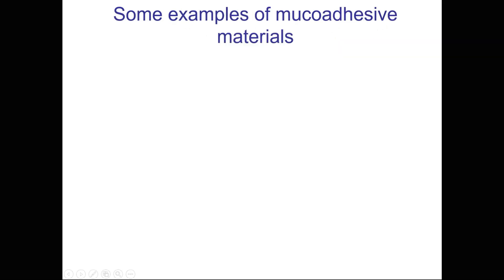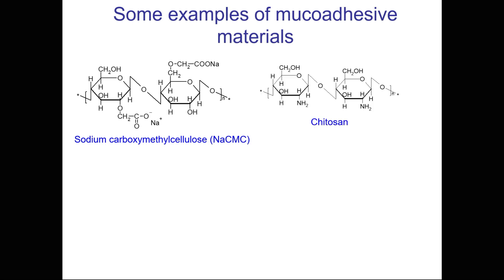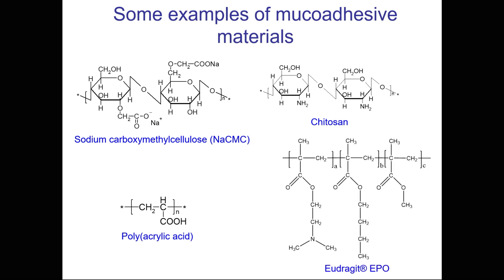Mucosal adhesive dosage forms can be prepared from formulations containing sticky polymers. These polymers are typically soluble in water. This may include natural polymers such as sodium carboxymethylcellulose, derived from cellulose, or chitosan, which is prepared from the exoskeleton of crustaceans. Alternatively, some synthetic polymers could be used such as polyacrylic acid, or a more complex system called Hydrogid EPO, which is manufactured by the German company Evonik.